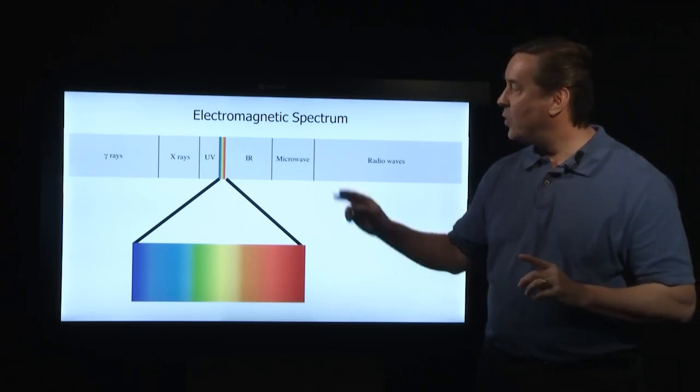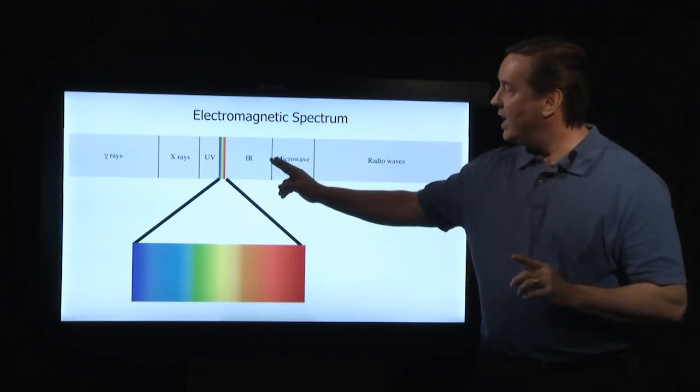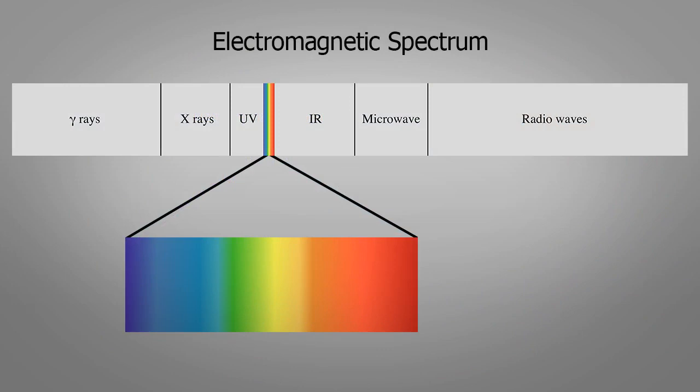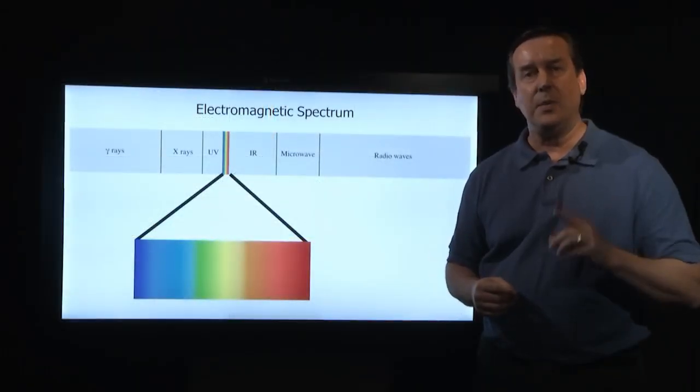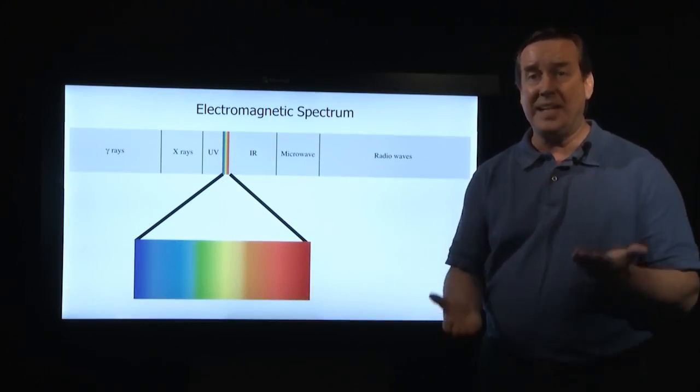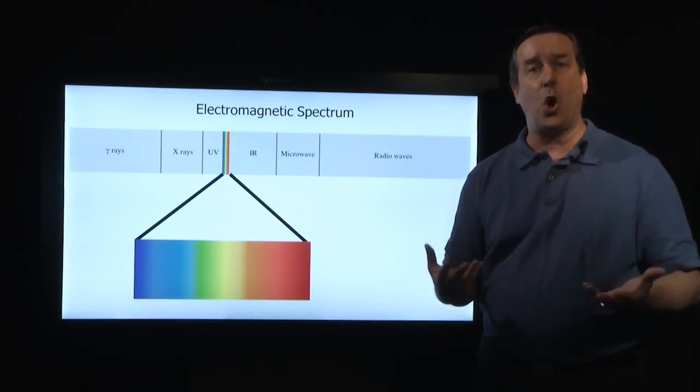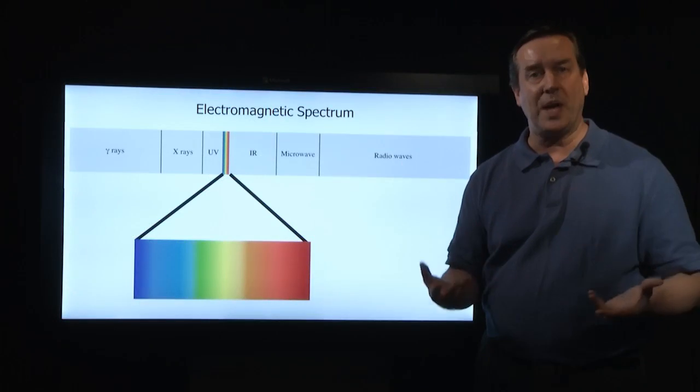Light that has wavelengths longer than red includes the infrared, microwaves, and radio waves. Light that has higher energy than violet includes ultraviolet light, X-rays, and gamma rays. All of these are different forms of the same phenomenon. And, because light is an oscillating wave of electric and magnetic fields, this is called the electromagnetic spectrum.